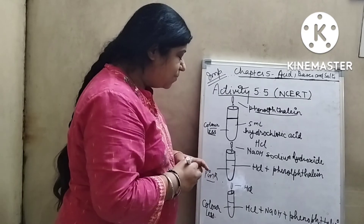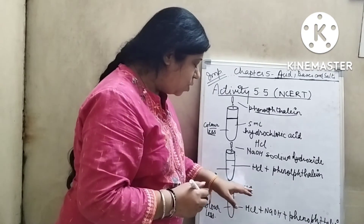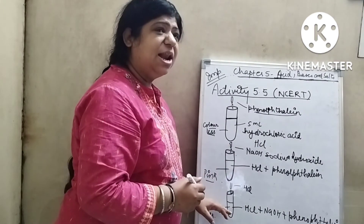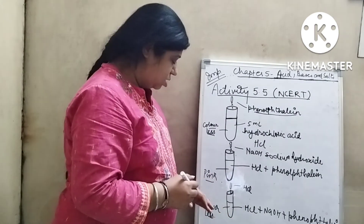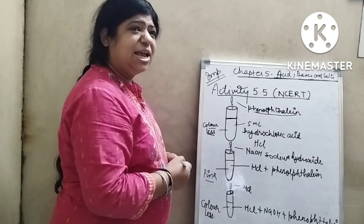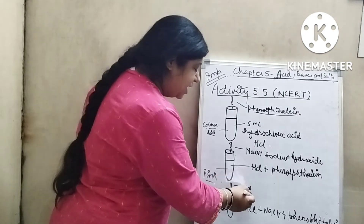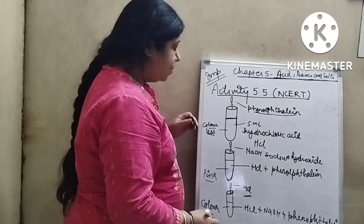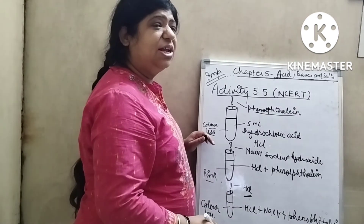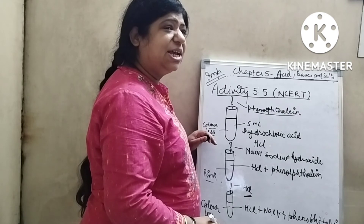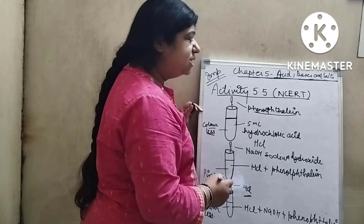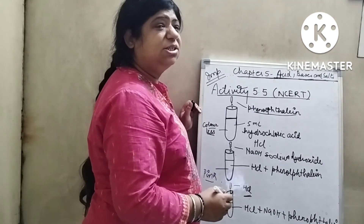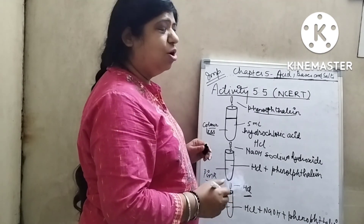Now if you add some more HCl, that is hydrochloric acid, the pink color will disappear. Now this is acidic in nature because you have added excess of HCl, so it will be colorless. When it is basic in nature, it will show pink color. When it is acidic in nature, it shows colorless. Hope this concept is clear to all of you.